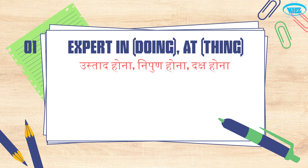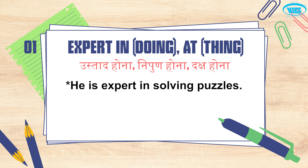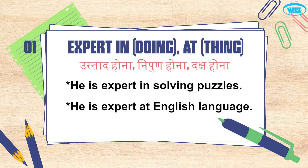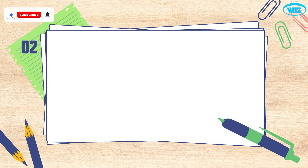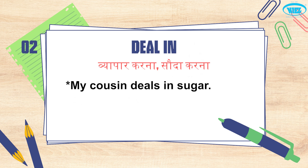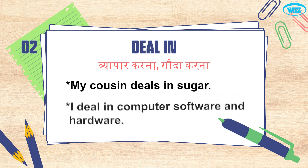Next is 'expert at something'. For example: 'He is expert in solving puzzles' — here we use 'expert in' with the -ing form. And: 'He is expert at the English language' — meaning he is an expert in the English language. The next phrasal verb is 'deal in', which in Hindi means to trade or do business. For example: 'My cousin deals in sugar.'